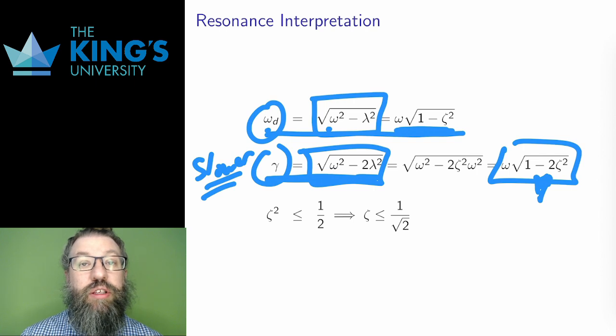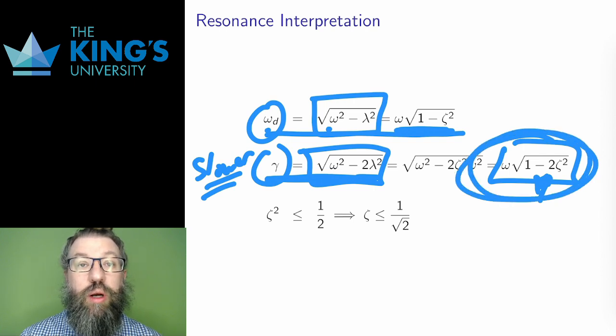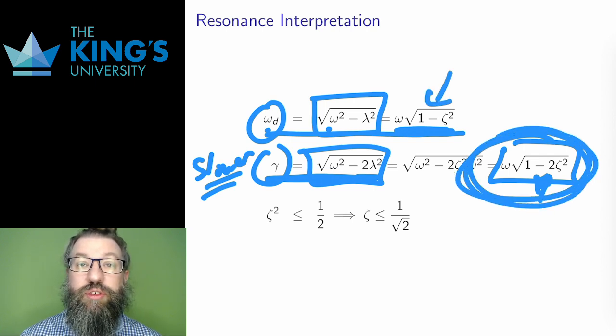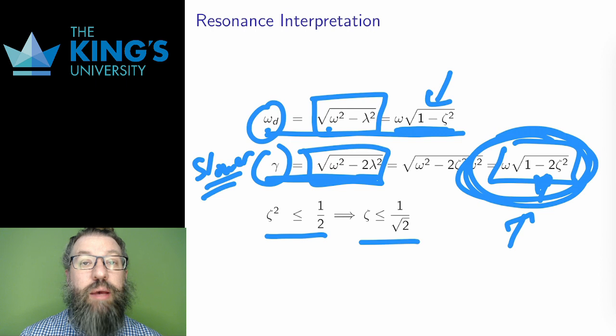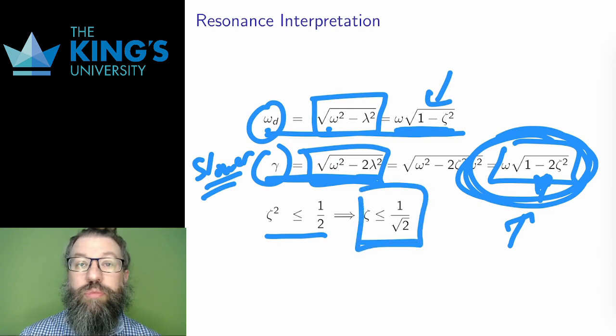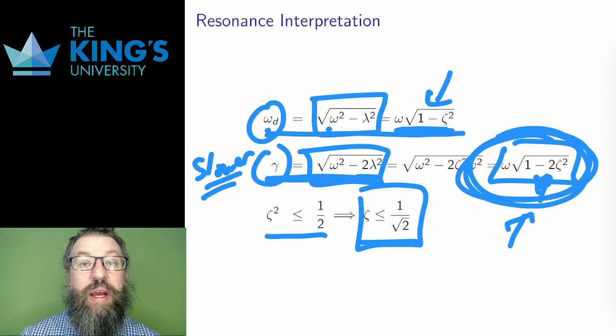Second, there is a condition here. The previous square root always made sense for any underdamped system. Here, however, the two makes the square root more problematic. Now I need zeta squared to be less than one half, which means that zeta is less than one over root two. Remember, zeta is the damping coefficient. Smaller zeta is less friction. So the friction needs to be quite limited to allow resonance to happen at all. Not all systems, even underdamped ones, even have a resonant frequency.